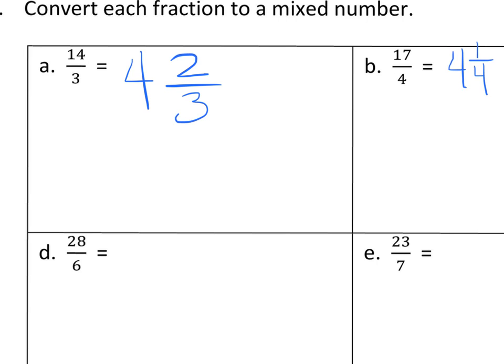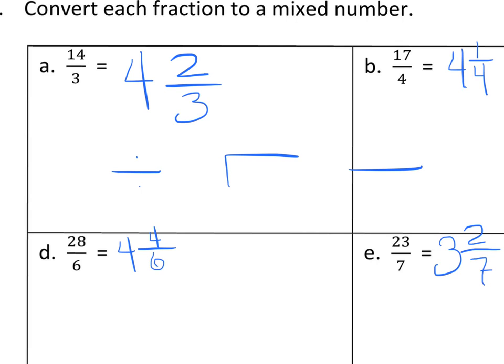On D: 6 goes into 28 four times, which makes 24, and 4 more would make 28 — so 4 and 4 sixths. On E: 7 goes into 23 three times, making 21; 22, 23 — 2 more out of the 7, so 3 and 2 sevenths. Continue practicing converting improper fractions into mixed numbers, and use this division as a shortcut. Recognize that there are lots of different division symbols and ways to divide.